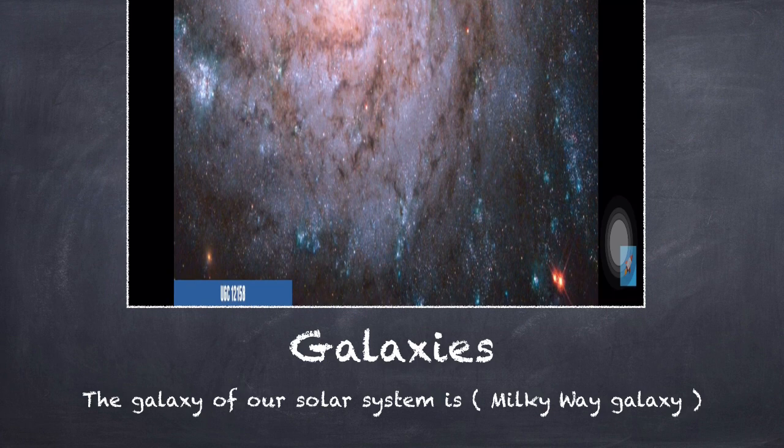Milky Way galaxy takes an oval shape with coiled spiral arms extending from it. The Sun lies on one of these spiral arms.